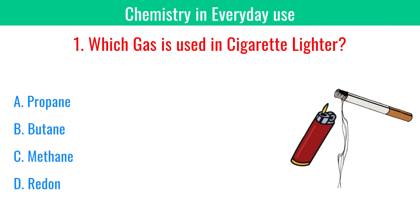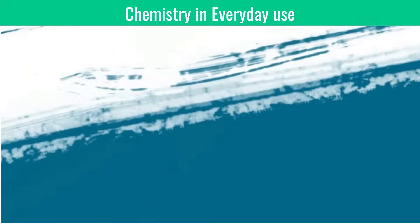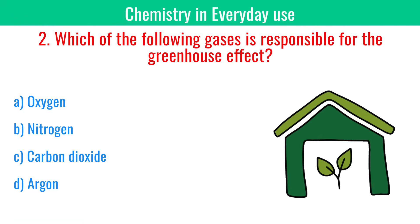Which gas is used in cigarette lighters? Butane. Which of the following gases is responsible for the greenhouse effect? Carbon dioxide.